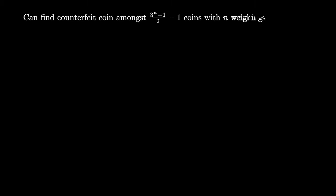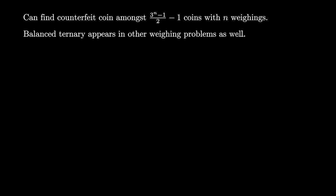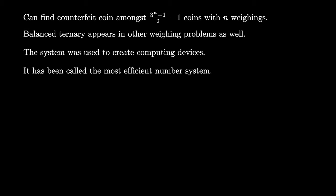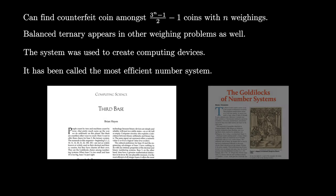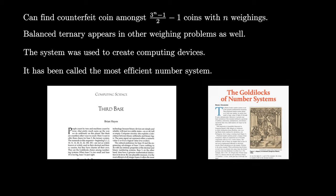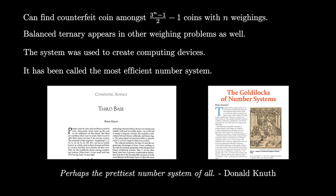You can generalize this process to find a counterfeit coin amongst (3 to the n minus 1) over 2, minus 1 coins using exactly n weighings. The balanced ternary representation also appears in many other weighing problems. This numeral system was used to create computational devices, though none really caught on. In some sense it can be considered the most efficient number system, and I love it because it can represent both positive and negative integers naturally. For further reading, I recommend 'Third Base' by Brian Hayes, or 'The Goldilocks of Number Systems' by Brian J. Shelburne. As Donald Knuth observed, perhaps this is the prettiest number system of all.